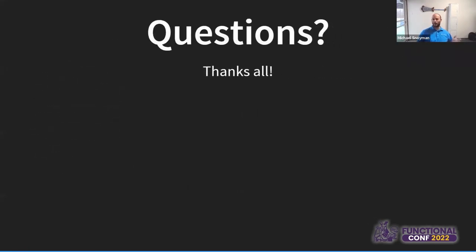That is the end of the talk — so now I'll take questions. One question: all advantages in Haskell these days are about better libraries for STM, etc. — couldn't other languages adopt those libraries? STM in particular is one I really picked on because it really can't be adopted by other languages without fundamental changes. There are other languages with some level of STM, but what makes STM so powerful in Haskell is the fact that we have purity. I think the .NET team tried for quite a while to add STM to .NET languages and eventually had to give up because they didn't have that purity backing everything.